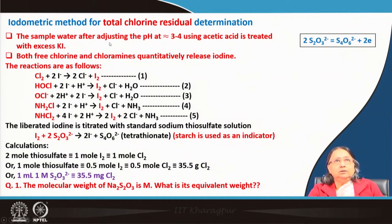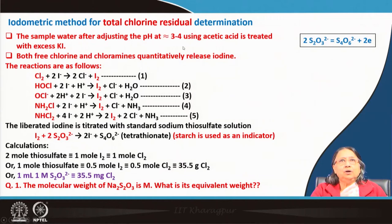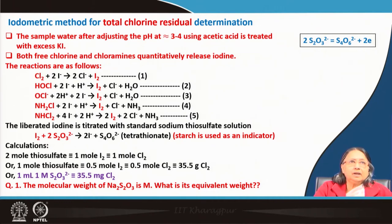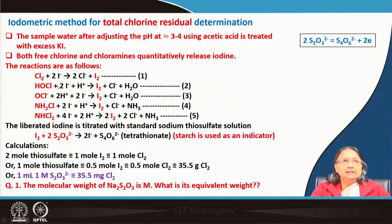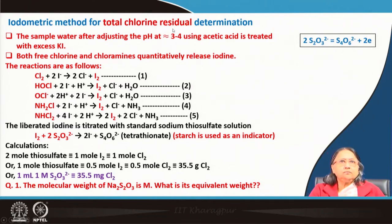We take a 50 or 100 mL sample, adjust the pH with acetic acid, then add KI in excess. Reactions 1 through 5 show that Cl₂, HOCl, OCl⁻, NH₂Cl (monochloramine), and dichloramine all react with KI to produce iodine. Because all species — free and combined chlorine — produce iodine, this is called the total chlorine determination.